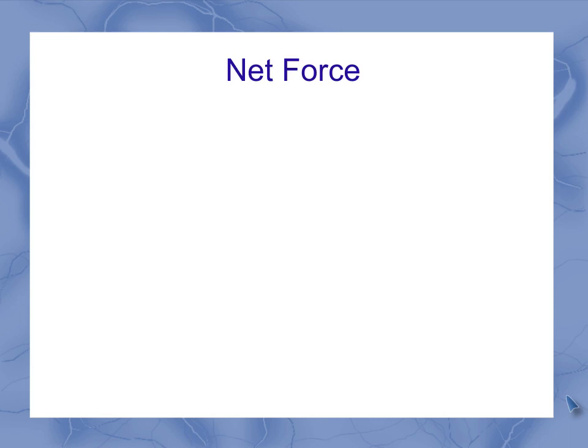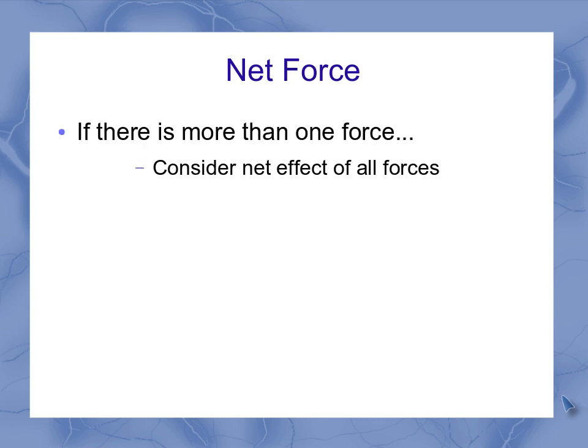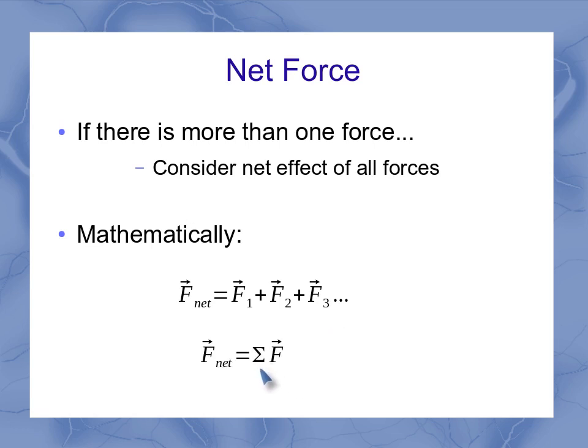So net force. Let's talk about what that means here. If I have more than one force, I have to consider the net effect of all the forces. If there's only one force, that is the net force. But if there's more than one, I need to take that into account. Mathematically, we express this as the net force is the sum of however many forces I have acting on the system. If I've got two forces, I have to add those two forces together to find the net force. This sum of however many forces I have is often written with the Greek uppercase sigma, and that's the summation symbol in mathematics. So the sum of all the forces is the same thing as the net force.